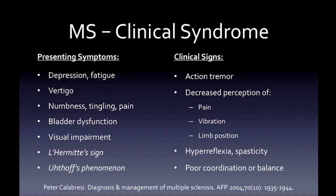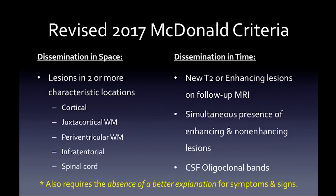We have to remember that MS is a clinical syndrome, not a radiographic or MRI syndrome. When you look in the chart, look for presenting symptoms: depression, fatigue, vertigo, numbness, tingling, pain, bladder dysfunction, visual impairment, and the classic Lhermitte sign. There's also Uhthoff's phenomenon, where MS symptoms worsen in the heat. Clinical signs include action tremor, decreased perception of pain, vibration, limb position, spasticity, and poor coordination.